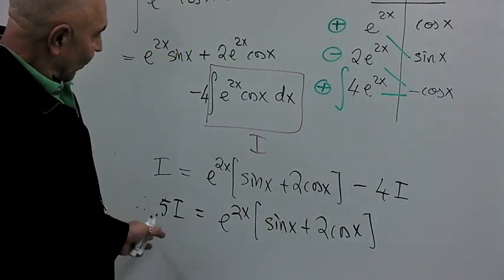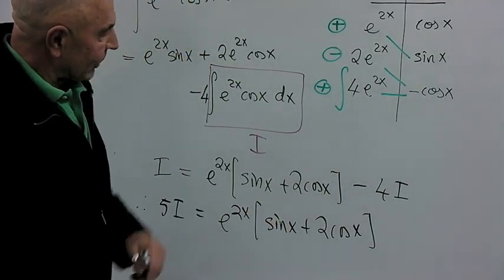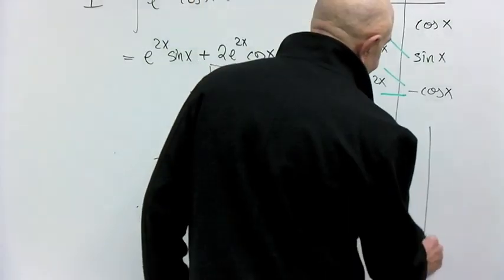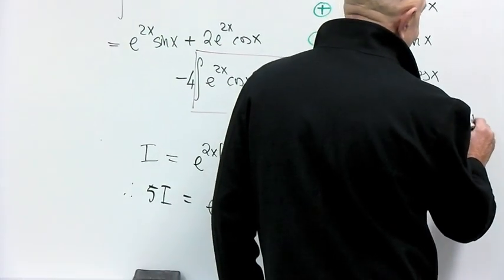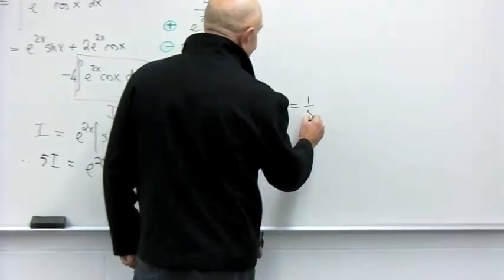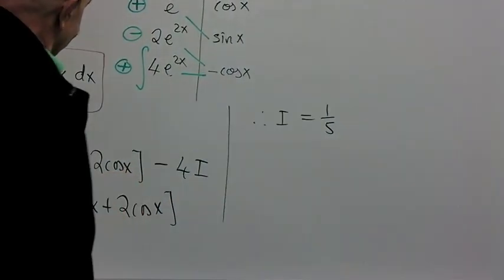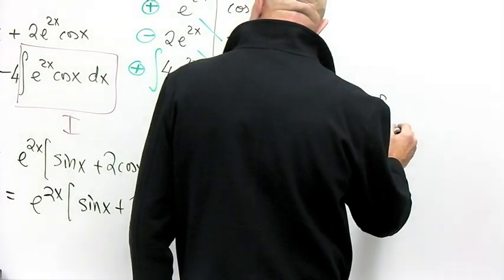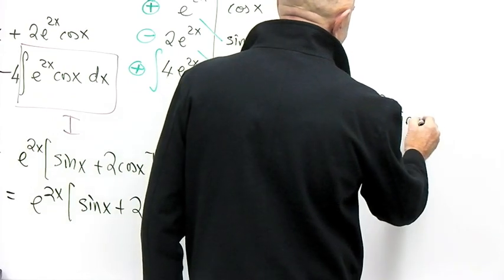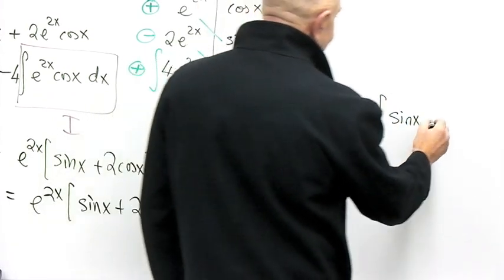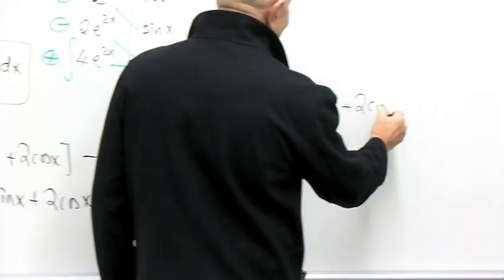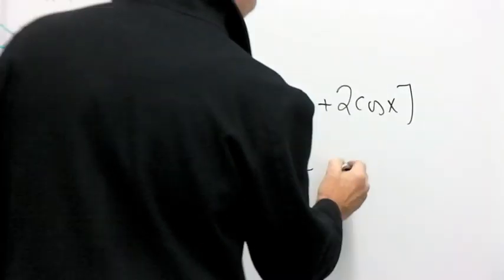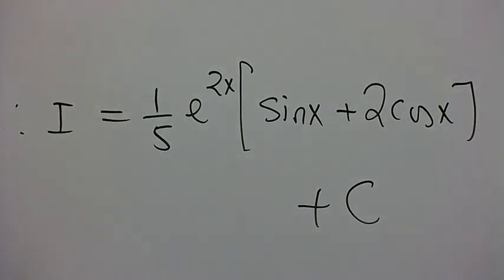So, what is I? Just one-fifth of this thing on the right-hand side. And I is one-fifth of this expression, which is e to the 2x multiplied by sine of x plus twice cosine of x. And don't forget to add plus arbitrary plus C. And we're done.